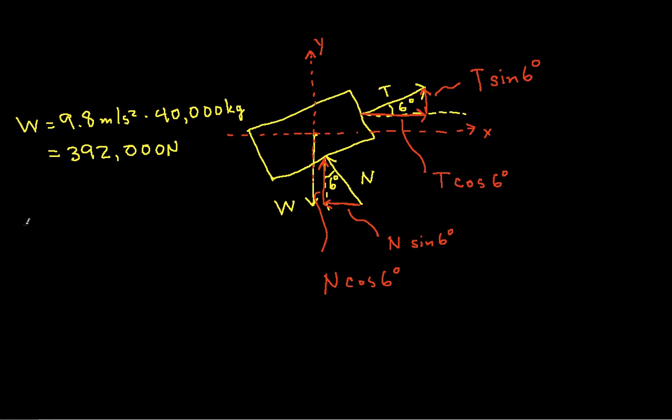So let's get the summation of the forces in the x direction. And with that, we have this term, which would be T cosine 6 degrees. And we have this term. It'll be negative because our arrow is pointing to the left. So we have minus N sine 6 degrees. And that's equal to 0.